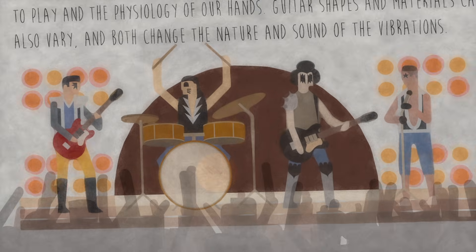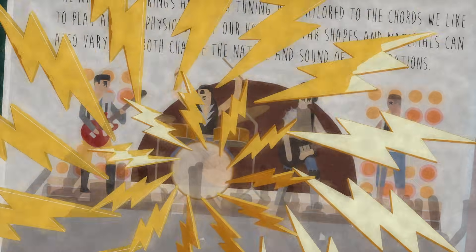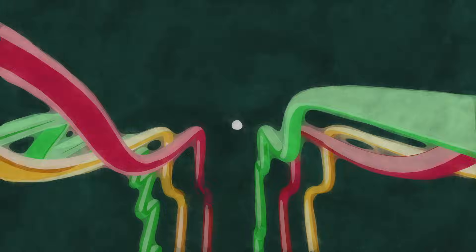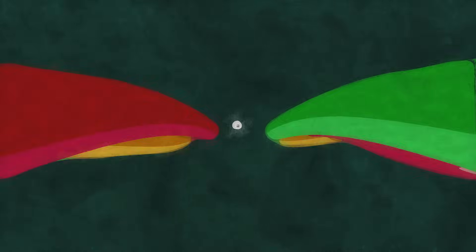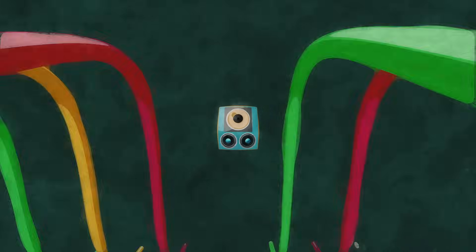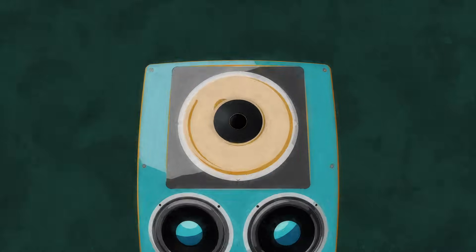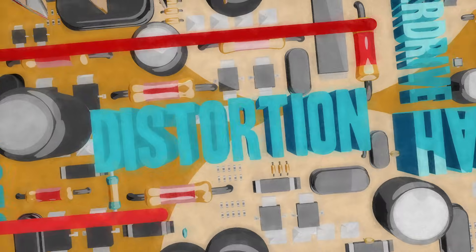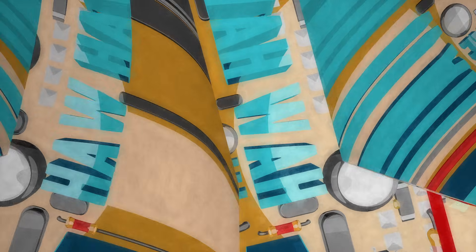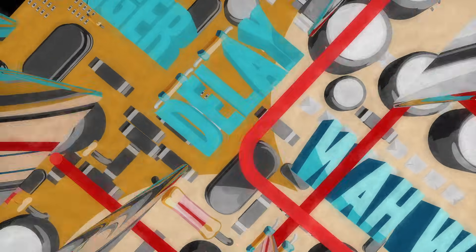And electric guitars give you even more to play with. The vibrations still start in the strings, but then they're translated into electrical signals by pickups and transmitted to speakers that create the sound waves. Between pickups and speakers, it's possible to process the wave in various ways to create effects like distortion, overdrive, wah-wah, delay, and flanger.